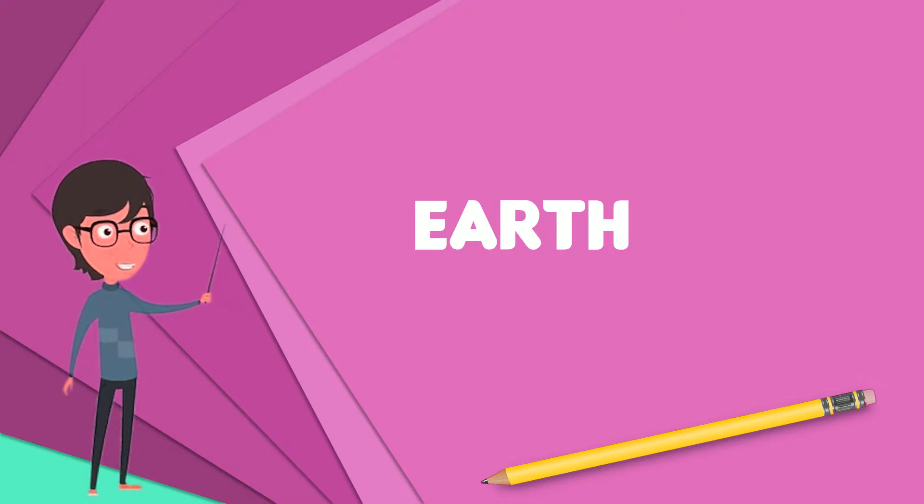During this time, Earth rotates about its axis about 366.26 times. Earth's axis of rotation is tilted with respect to its orbital plane, producing seasons on Earth.